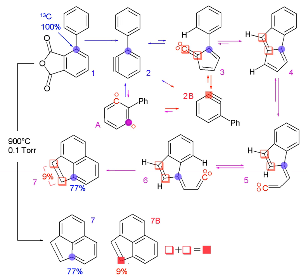Because the labeled atom has the same number of protons, it will behave in almost exactly the same way as its unlabeled counterpart and, with few exceptions, will not interfere with the reaction under investigation. The difference in the number of neutrons, however, means it can be detected separately. Nuclear magnetic resonance and mass spectrometry are used to investigate mechanisms of chemical reactions, detecting isotopic differences and allowing information about the position of labeled atoms in the product's structure to be determined, revealing the reaction pathway.